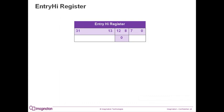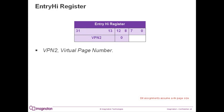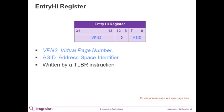I'll now go into details on registers involved with the TLB functionality, starting with the entry high register. The entry high register is register 10 of coprocessor 0. This slide assumes a 4K page size. The register contains two elements: the virtual page number and the address space identifier, or ASID. The ASID field is written by software usually during a context switch. Entry high is filled in when you are reading a TLB entry using the TLB read instruction. Because the ASID field is overwritten by a TLBR instruction, software must save and restore the value of the ASID around the use of TLBR.